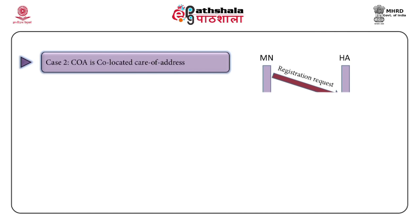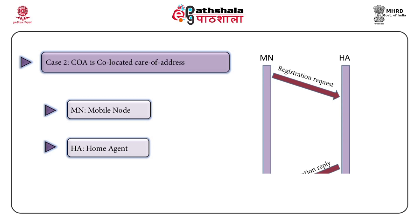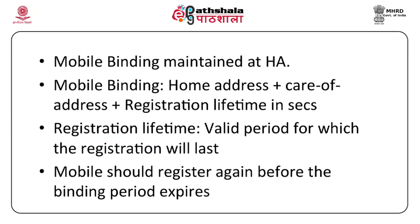In case 2, when the mobile node uses a co-located care of address, it acts as its own foreign agent. In this situation, the mobile node sends a registration request directly to the home agent, which authenticates it and sends the registration reply back to the mobile node. If the registration process is successful, the home agent maintains a mobile binding — recording the home address of the mobile node, the care of address, and the registration lifetime.